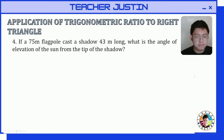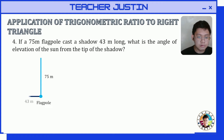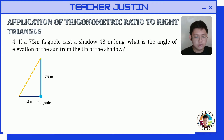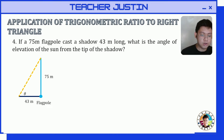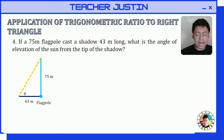First, we need to illustrate the problem. We have the flagpole that is 75 meters long, and it will cast a shadow that is 43 meters long. We're looking for the angle from the shadow going to the top of the flagpole — that will be the angle of elevation.